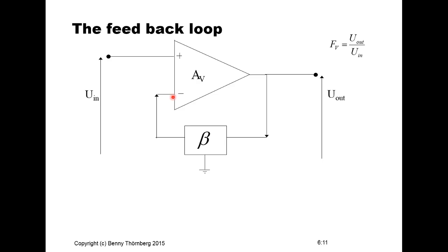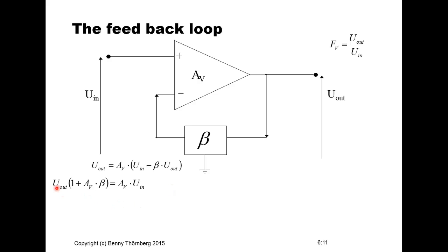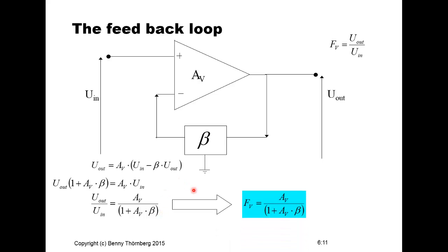Continuing to analyze this circuit: the output voltage equals the amplification AV of the amplifier element itself, multiplied by the input voltage minus beta times the output voltage. Rearranging so that output signal is on one side and input signal on the other allows us to compute the voltage amplification FV = AV / (1 + AV·β). This is the expression for the voltage amplification of the whole circuitry, dependent on the operational amplifier element as well as the feedback network beta.